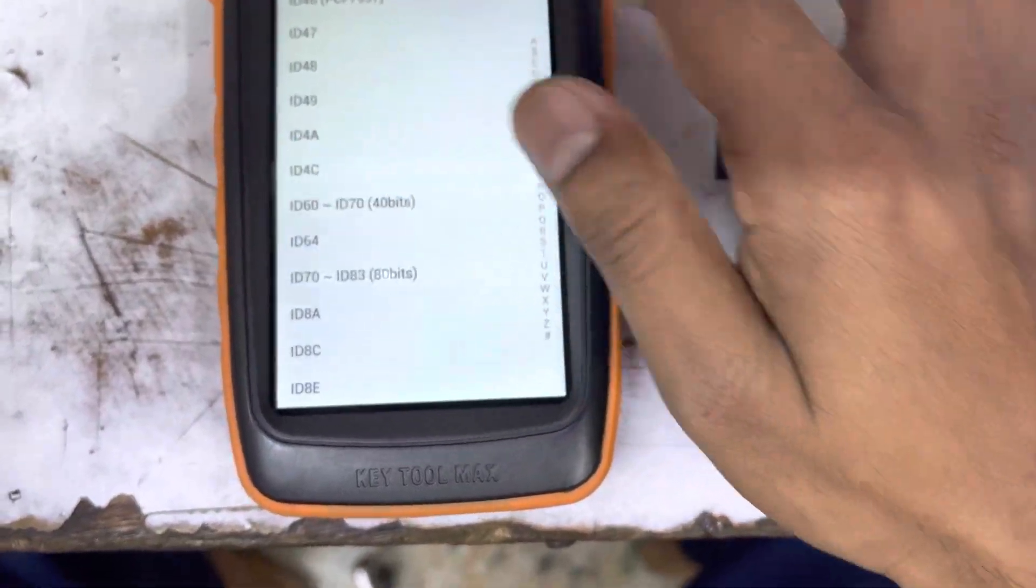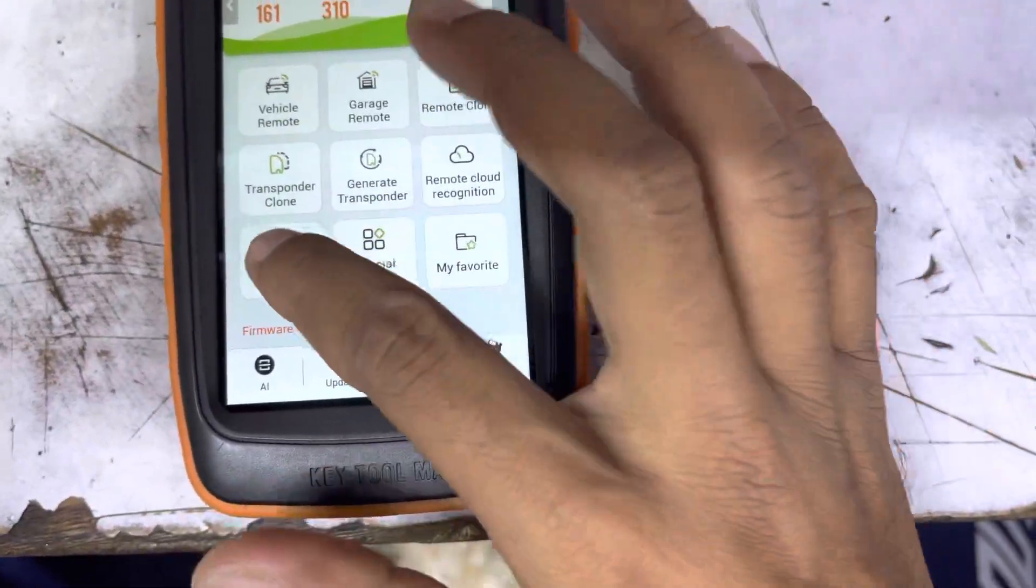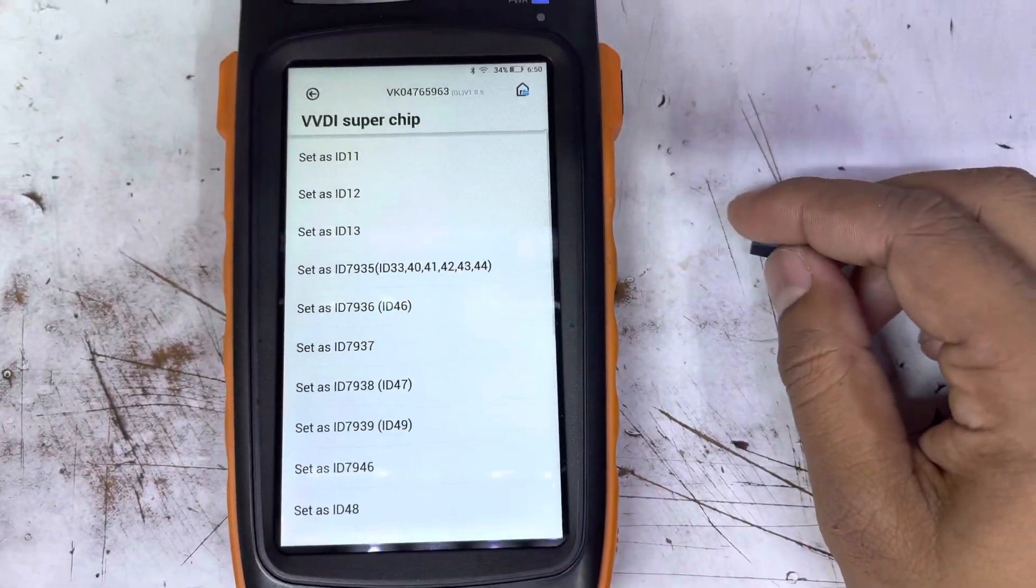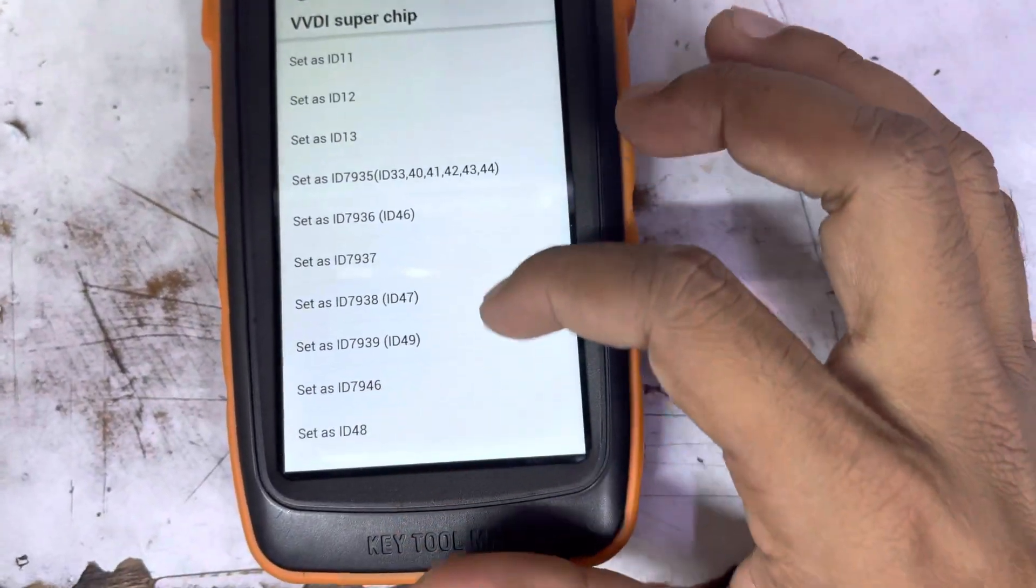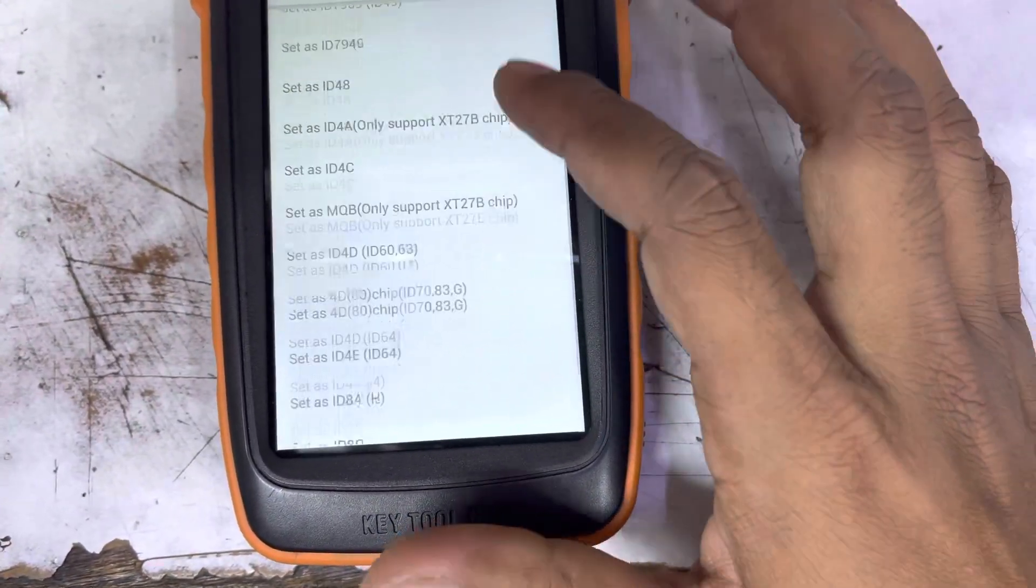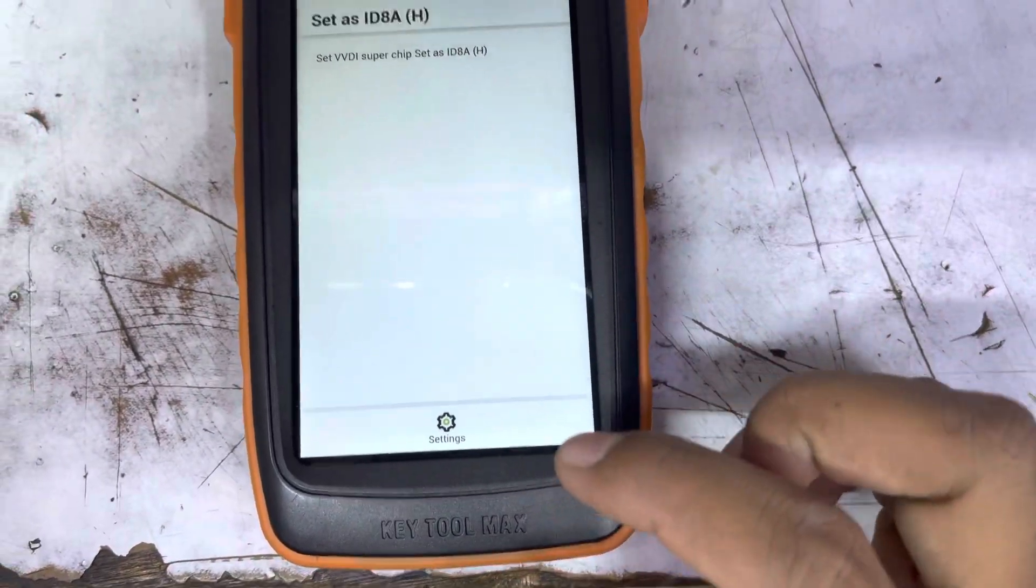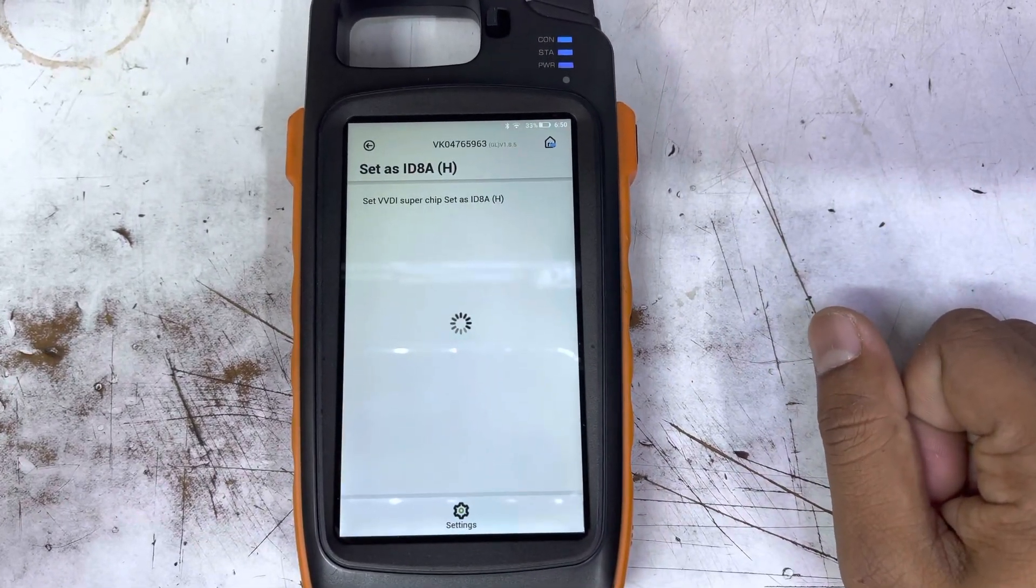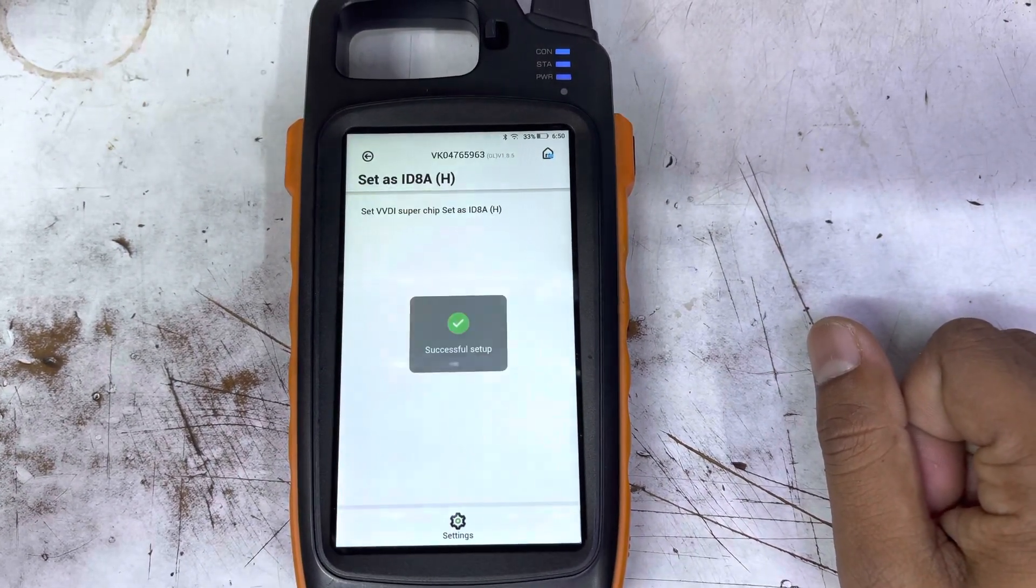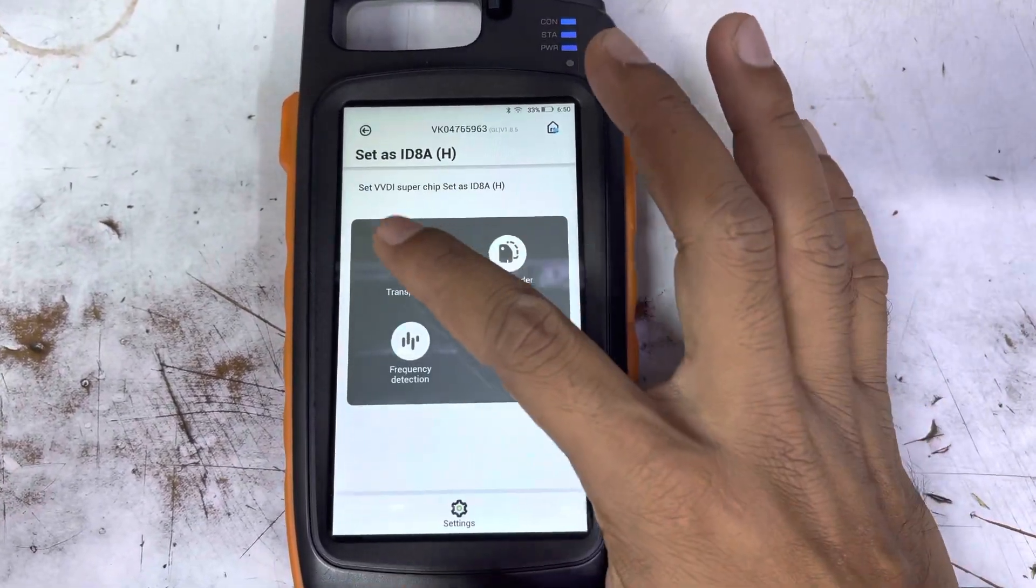Also there is this option, VVDI super chip. Just put the chip here and set it as anything. I can try it first. Now we set it up as 8A. Yes, you can see it.